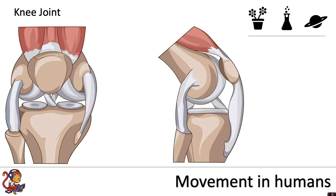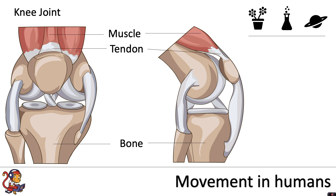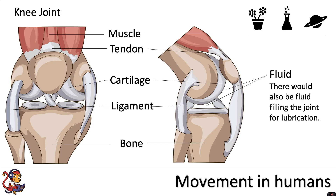Let's now look at the knee joint in a little more detail. You can see several bones, and the muscles are connected to bone via a tendon. At the end of the bones, where the two bones meet, you have cartilage — a tissue that prevents the bones rubbing together and wearing away. Connecting the bones together, you have ligaments. There is also fluid filling the joint for lubrication, so that you can move smoothly without friction.